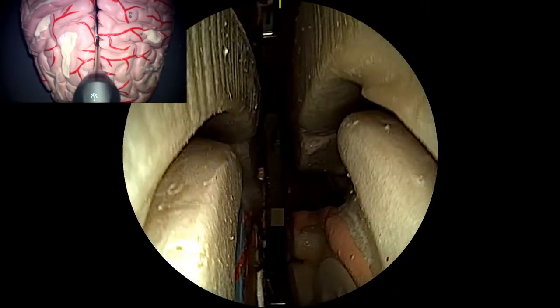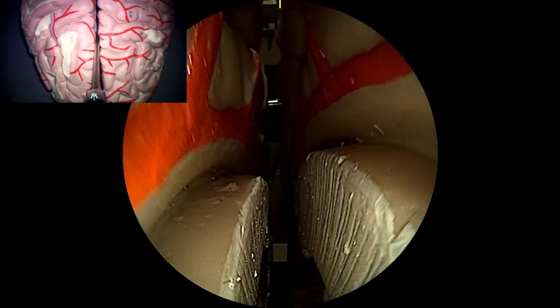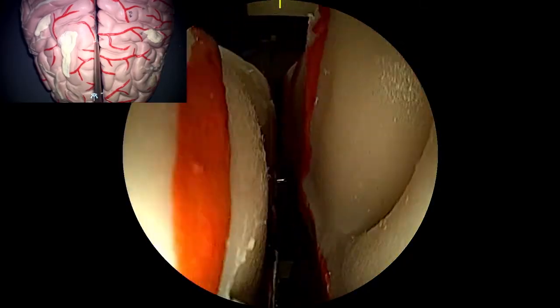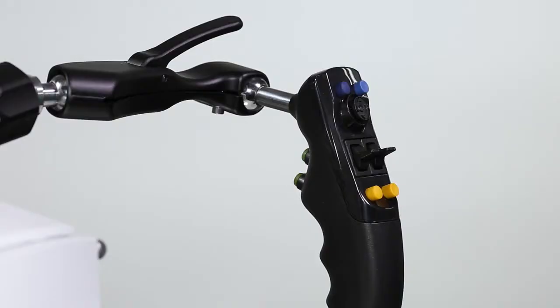The view from Zeiss Kinevo 900 in the picture-in-picture mode gives an overview of the surgical site. If required, you can easily increase or decrease brightness levels by pressing the yellow buttons on the handgrip.